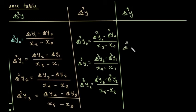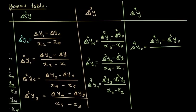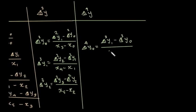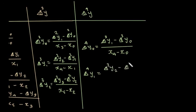For the fourth divided differences: Δ⁴y₀ = (Δ³y₁ minus Δ³y₀) divided by (x₄ minus x₀). And Δ⁴y₁ = (Δ³y₂ minus Δ³y₁) divided by (x₅ minus x₁).